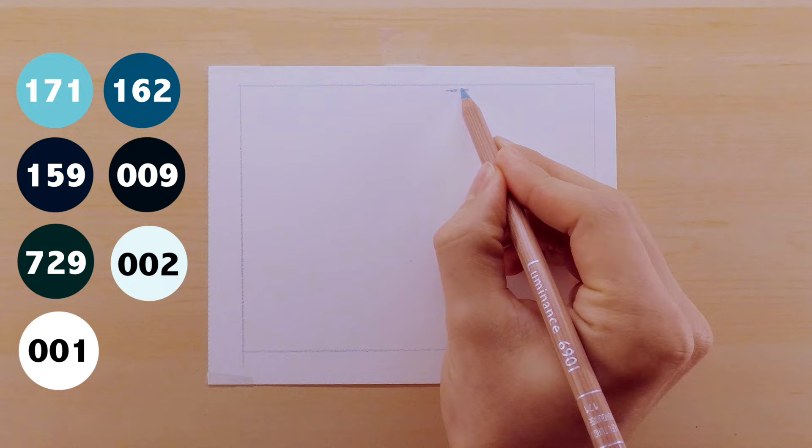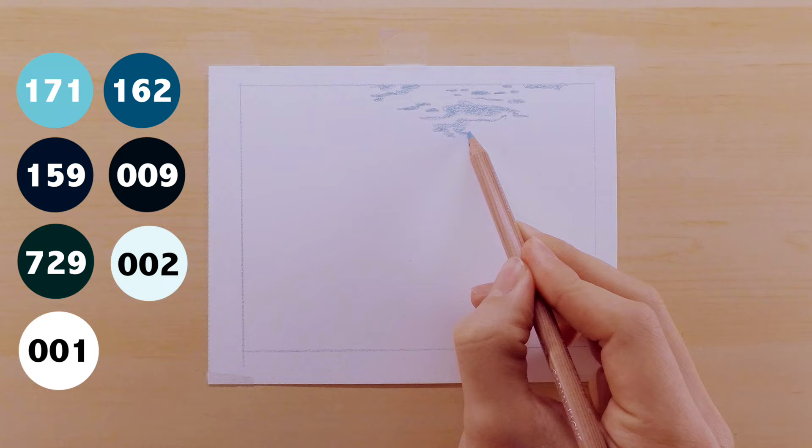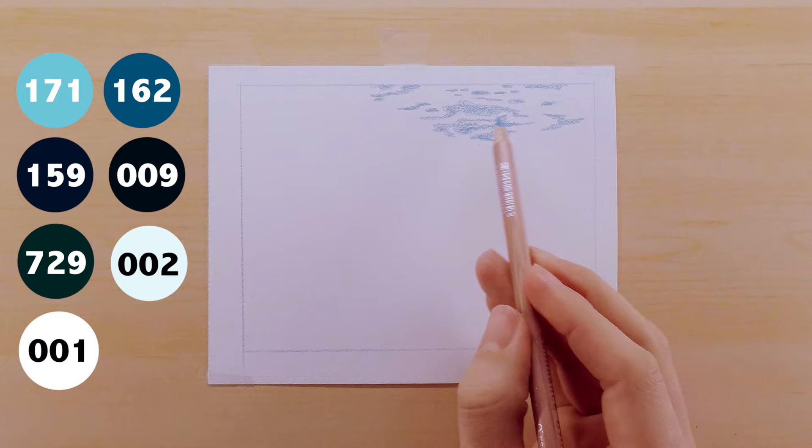The next thing I'm doing is I'm using my 171 pencil to create the highlighted spots at the top of the water. These are just kind of blobby weird shapes. There's no real design here.